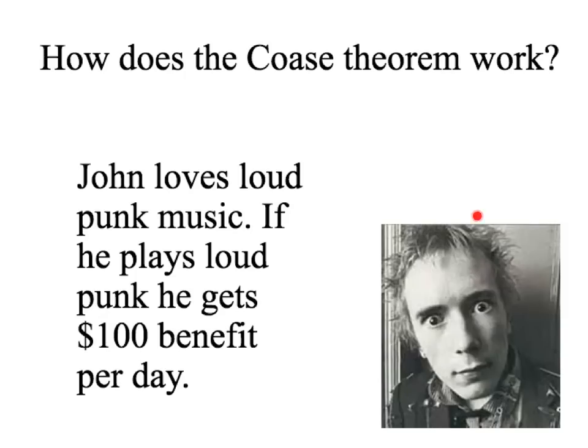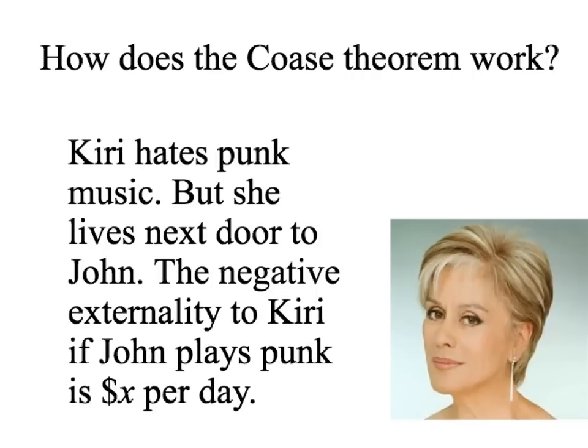Here we have a picture of Mr. Rotten, known as John to his friends. John is responsible for that introductory music — he loves loud punk music, and if he plays loud punk, he gets $100 benefit per day. There's a problem. Here we have a picture of Miss Tikanawa, known as Kiri to her friends. She hates punk music, and unfortunately she lives next door to John. So there's a negative externality imposed on Kiri when John plays punk music. There's no property right — Kiri can't ask for compensation and John doesn't need permission. So he plays loud punk, and that leads to a negative externality of X dollars per day.